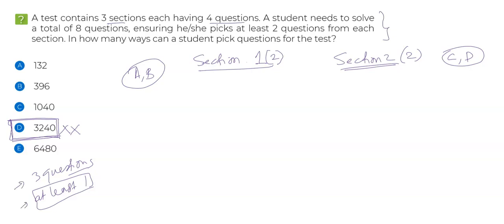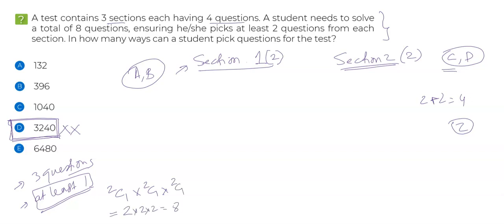Now let me show you the method you would have used. You need at least one from each section, so you take one question from section one — that's 2C1 — then one question from section two — that's 2C1. Now you've chosen two questions from four total. You still need one more, and two questions are left, so you write 2C1 again. The answer comes out as 2 × 2 × 2 = 8. You must have solved the original question the same way.